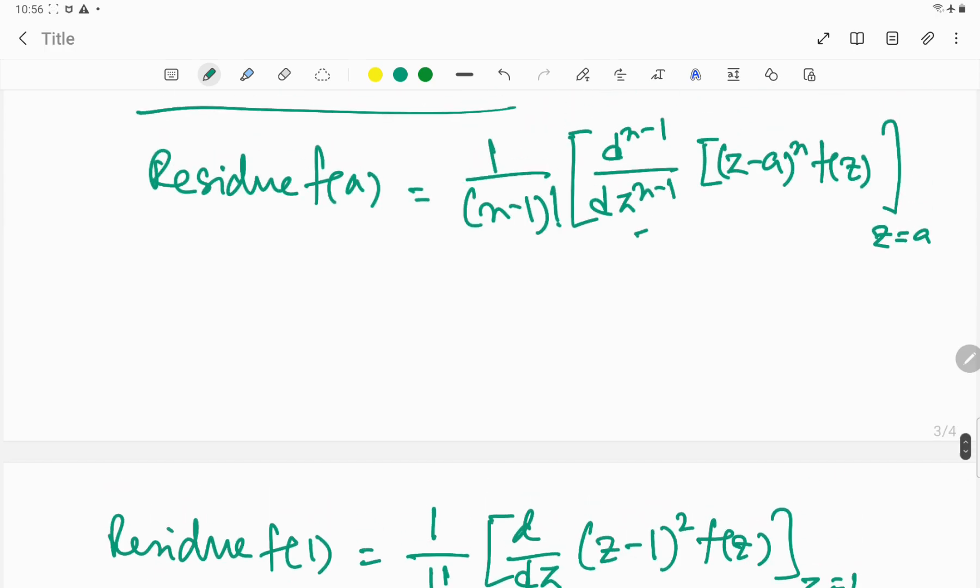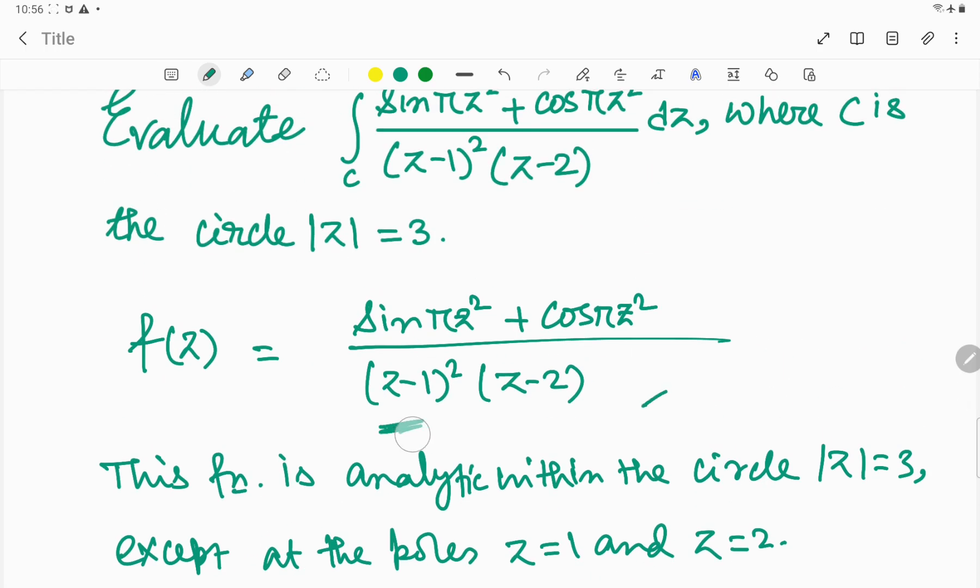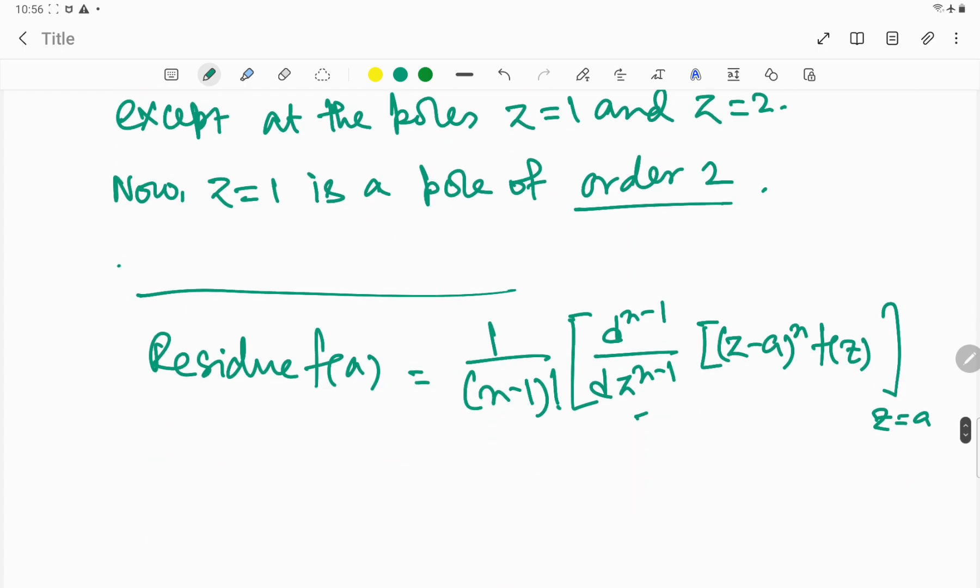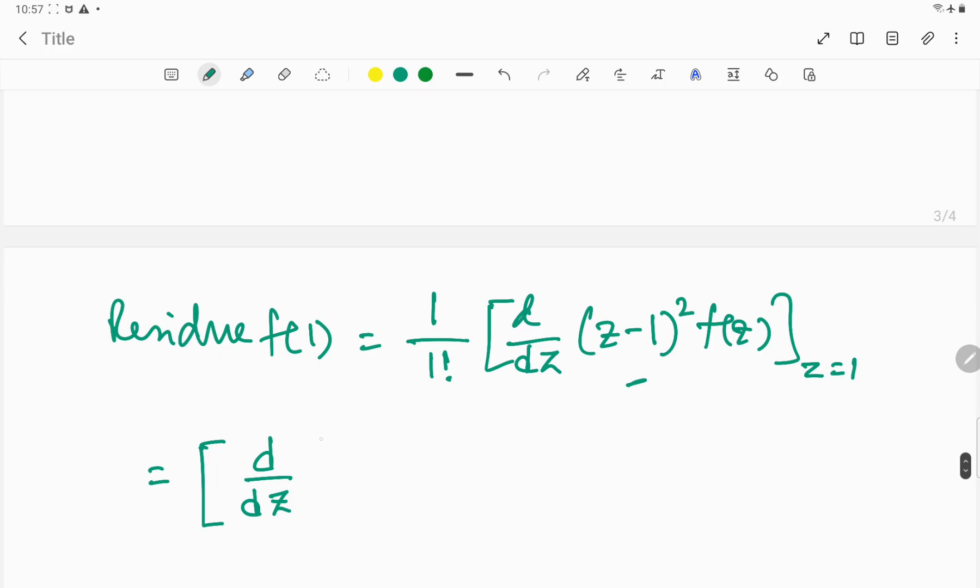Clearly if we put f(z) like this, you can see that this part will vanish because we already multiplied. So I just write the function as d/dz of [sin(πz²) + cos(πz²)]/(z-2), evaluated at z=1.